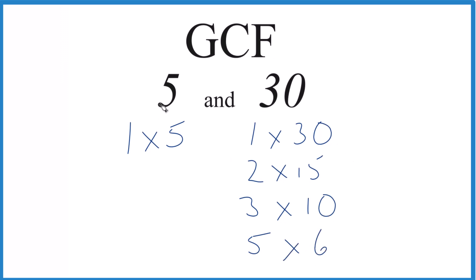If we look for factors in common, we see that both of them have 1, so that's a common factor, and both of them have 5. 5 is a common factor, and it's also the greatest common factor.